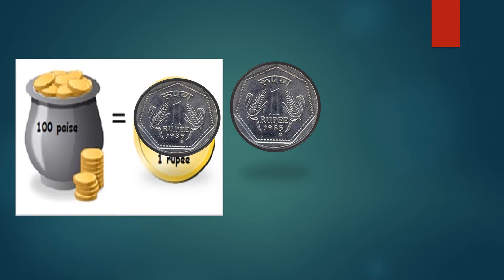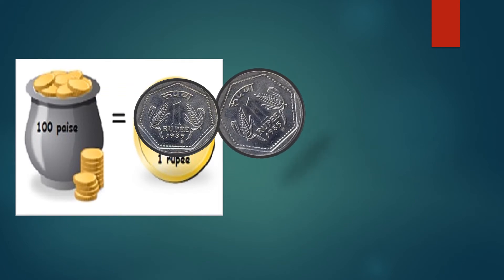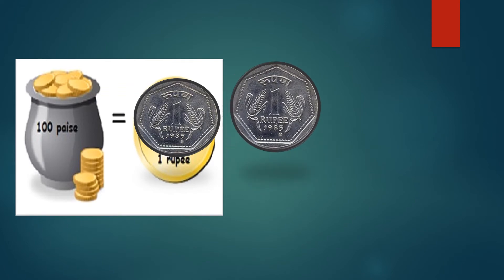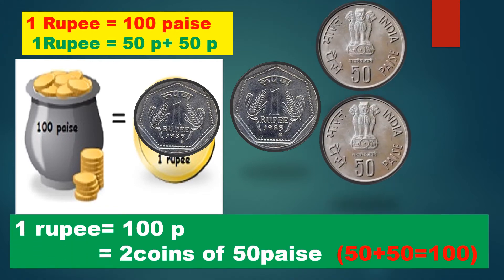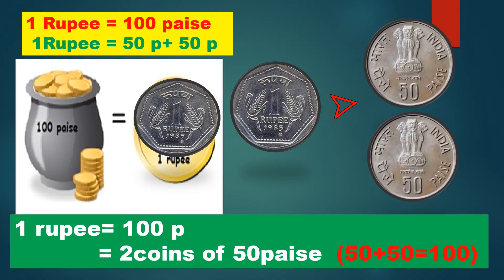1 rupee is equal to 100 paise. Or we can also say 1 rupee is equal to 50 paise plus 50 paise. It means if we have 2 coins of 50 paise, it will make 100 paise or 1 rupee.